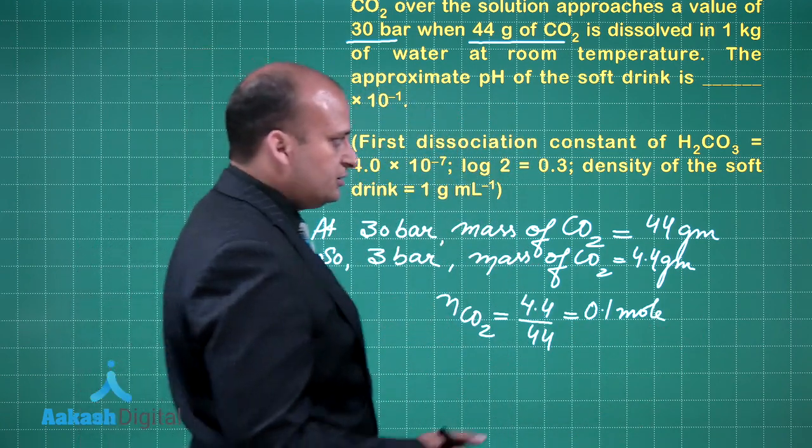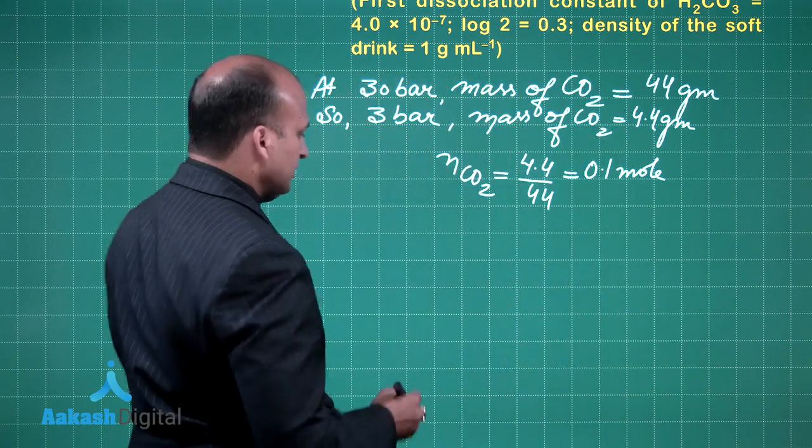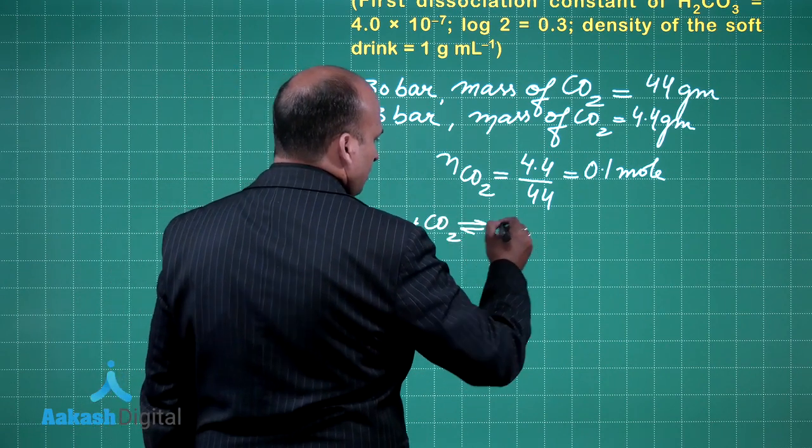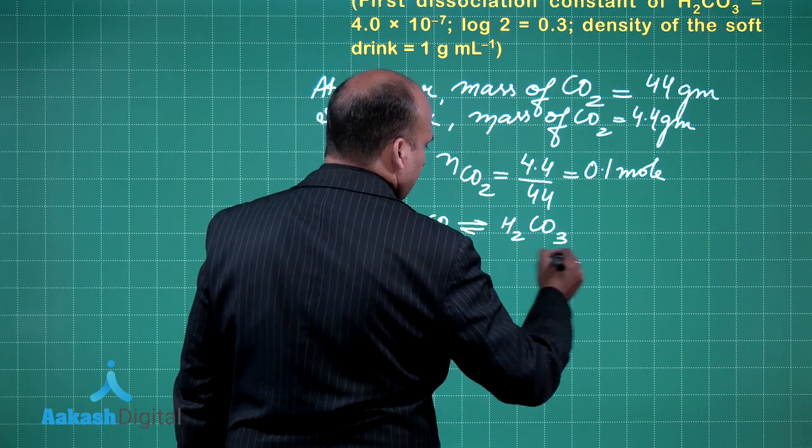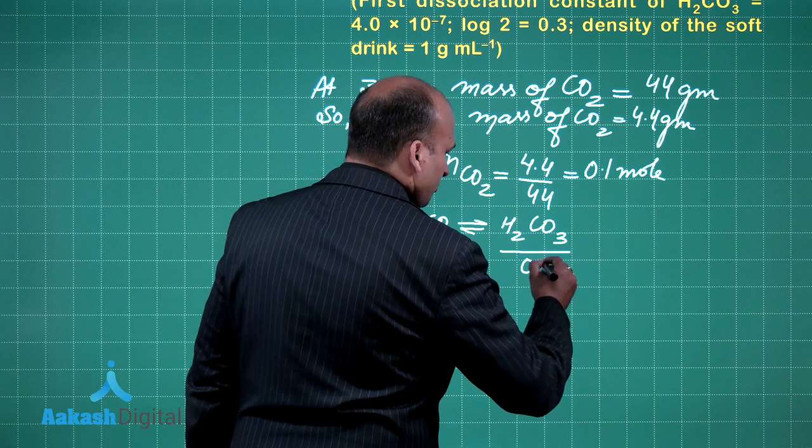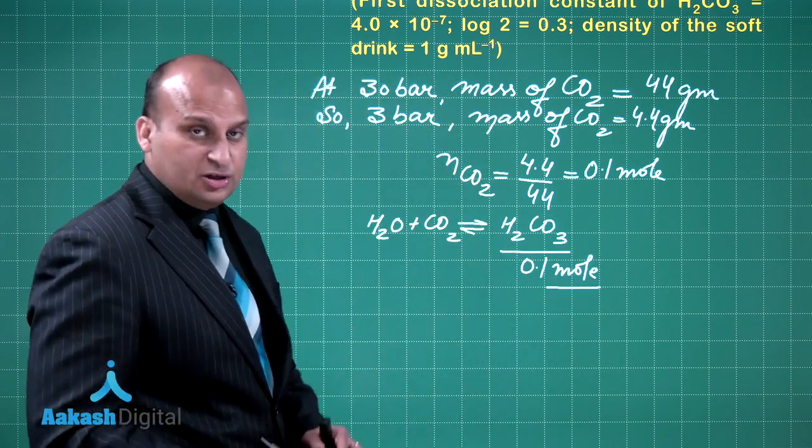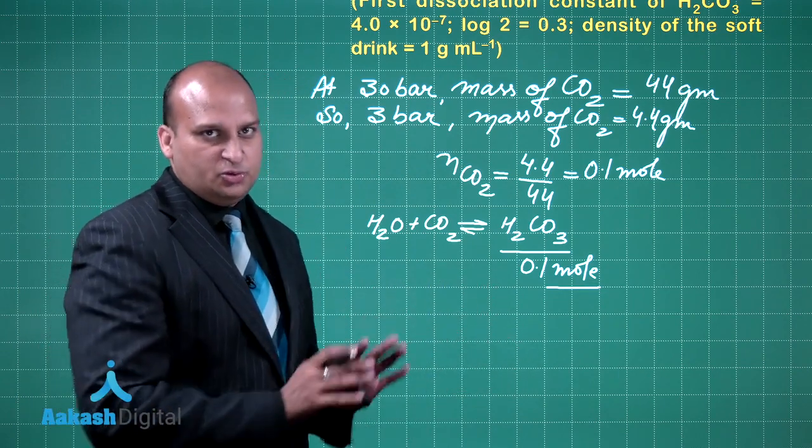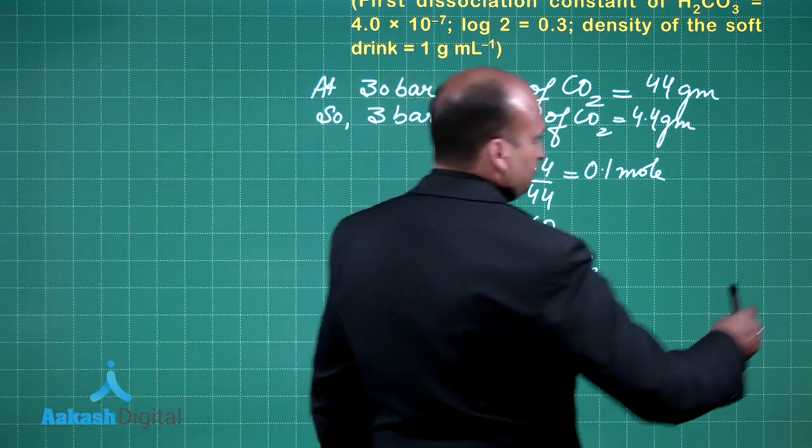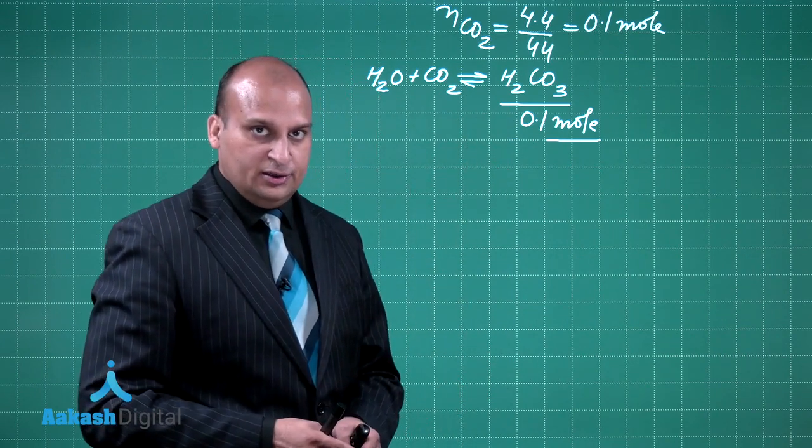At this pressure, this carbon dioxide is going to combine with water. Will this combine with water? Yes. So this H2O combines with the CO2 to give you H2CO3. Here I am assuming that the reaction has gone to completion and you have 0.1 mole of H2CO3 in the solution which is responsible for the acidic pH.